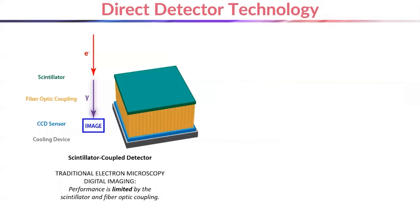Traditional detectors for electron microscopy use scintillators to convert electrons from the primary beam into photons, which are then transferred through a coupling to a sensor to form an image. The conversion of these electrons to photons and then the transportation of the photons through a coupling leads to inefficiencies and loss of signal and information.